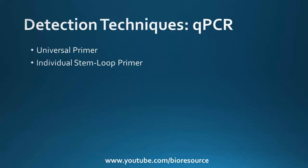For miRNA detection by qPCR, there are two different approaches. One is the stem-loop sequence-specific reverse transcription primer platform, and the other is the universal tailing RT-PCR.